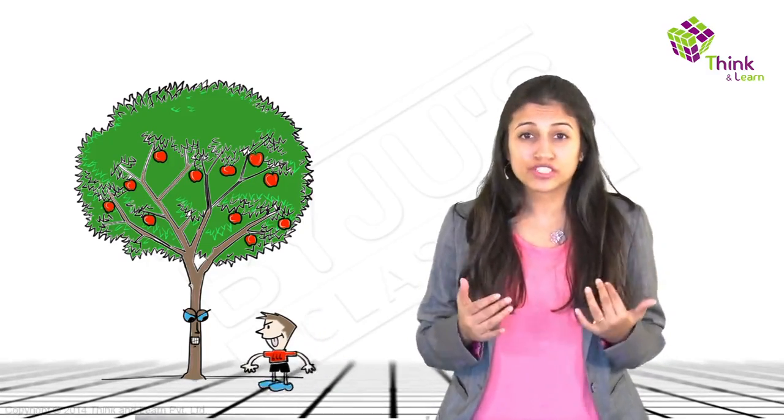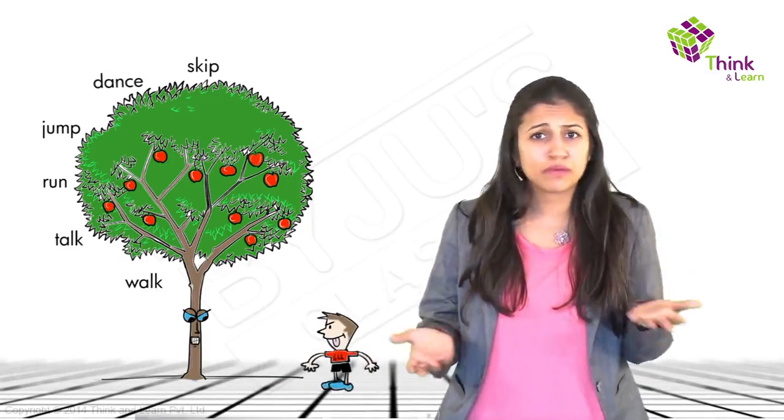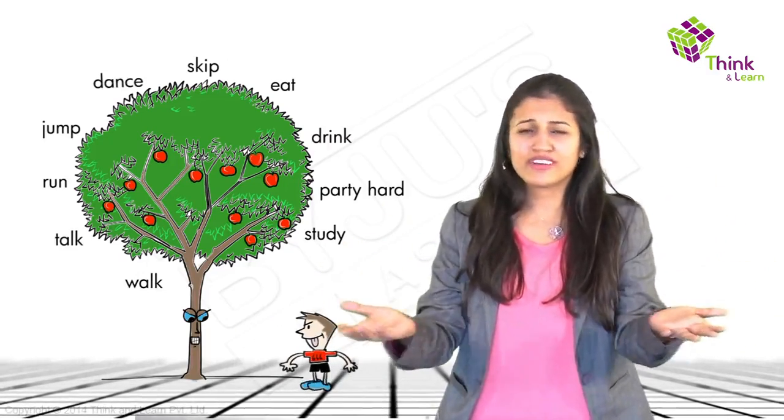You may ask, why the difference? Why can't they be the same? Well, you know for a fact that plants and us look really, really different — there's absolutely no resemblance between us and a tree. And plants cannot exactly do the myriad functions that we do, like walk, talk, run, jump, dance, skip, eat, drink, party hard, study, or sleep.